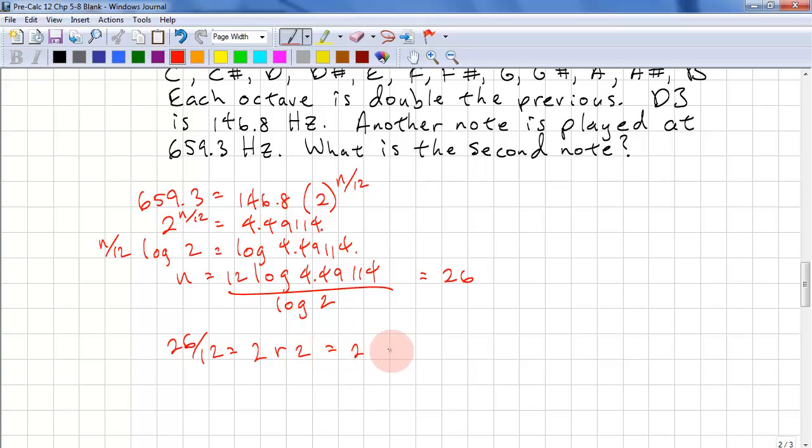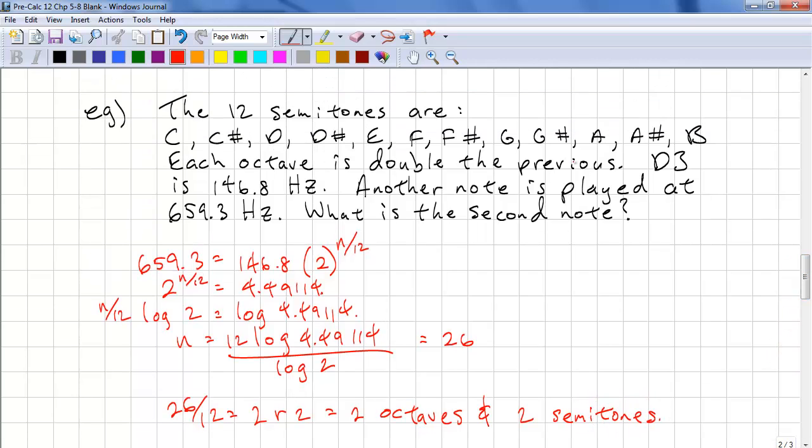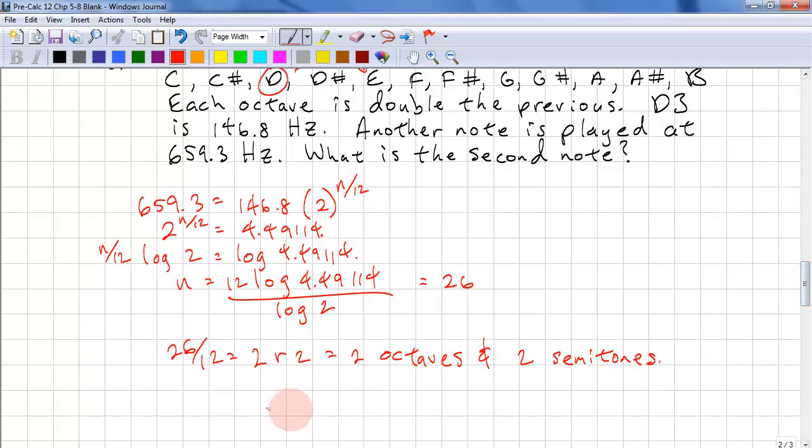So our answer means it's 2 octaves and 2 semitones. So if our note was at D, we have to go up 2 semitones, so we're going up to E. We're going up 2 octaves as well. So our answer is E5. That's the second note. The note is E5.